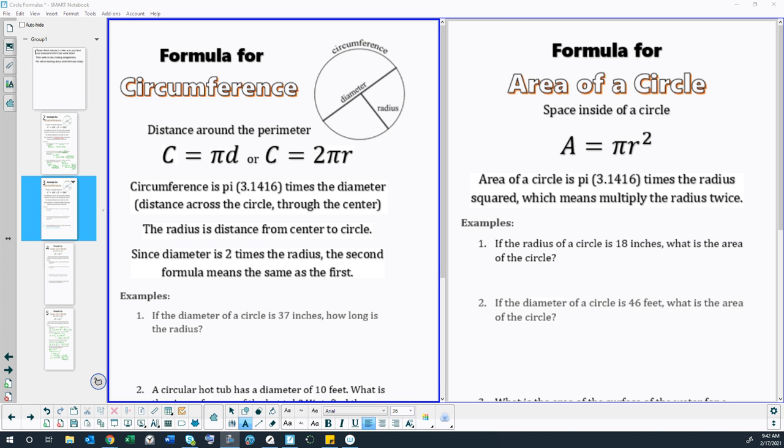Today we are talking about circles. So we have two different types of formulas we are looking at: one for circumference of a circle and one for the area of a circle. Now technically circumference has two different formulas simply because diameter and radius are related to each other but could be written separately in formulas.